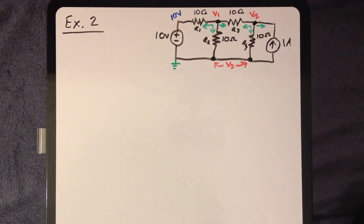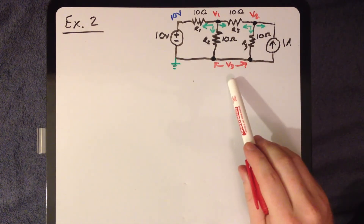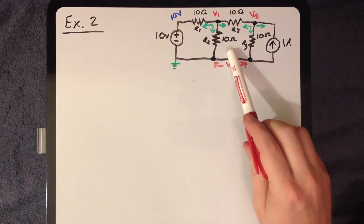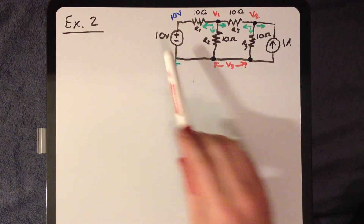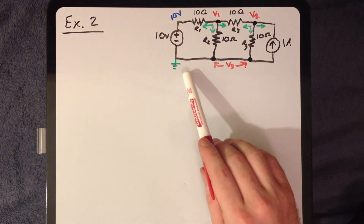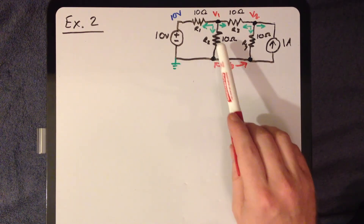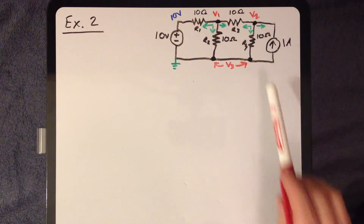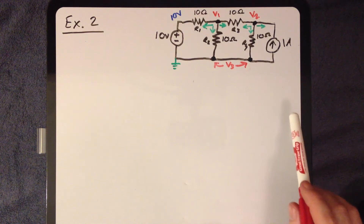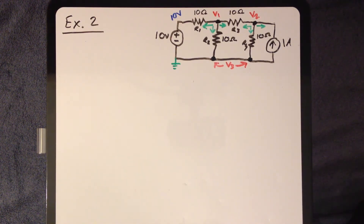Now for example 2. As you can see, it's a bit more complicated — we have 3 essential nodes instead of 2, and I've also added a current source. All resistors are 10 ohms, the voltage source is 10 volts, and the current source is 1 amp going in this direction. I've already assigned our ground reference point and drawn 3 arrows to represent the branches we'll be analyzing. Feel free to pause the video and copy down this figure if you're taking notes.